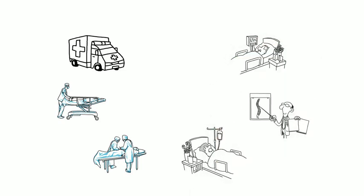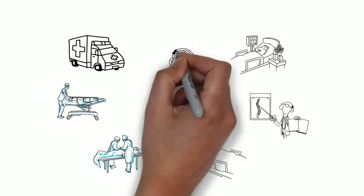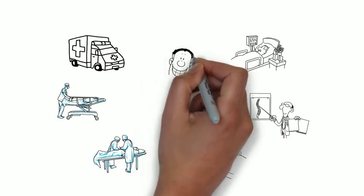For example, the patient may take too long to be shifted from the ambulance to the emergency area, or the doctors may not attend to the patient in the emergency room promptly. These are areas where the process can be audited.